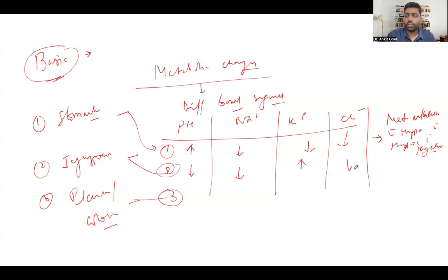So in jejunum, what do you find? There will be metabolic acidosis and what type of metabolic acidosis will be there? There will be hyponatremic, hyperkalemic, hypochloremic metabolic acidosis. So please try to remember this. It's very very important. Which component is elevated in jejunum? Don't confuse.